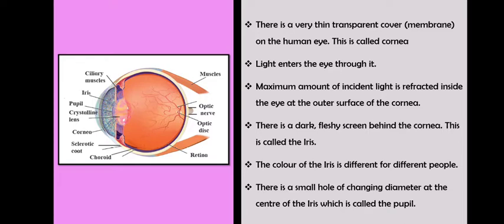There is a dark, fleshy screen behind the cornea, called the iris. It does the work of a screen behind the cornea. The color of the iris is different for different people, so depending on that, the eye color is different in different people.